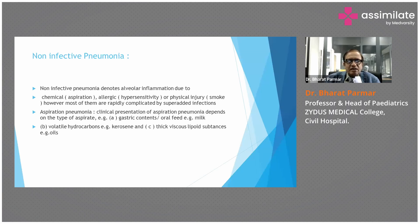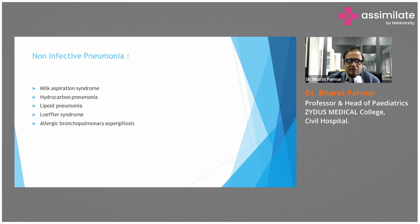Aspiration pneumonia: the clinical presentation depends on the type of aspirate, including gastric content, oral flora, milk, volatile hydrocarbons such as kerosene, and thick viscous lipoid substances such as oil. Types include lipoid pneumonia, male milk aspiration syndrome, hydrocarbon pneumonia, Loeffler syndrome, and allergic bronchopulmonary aspergillosis.